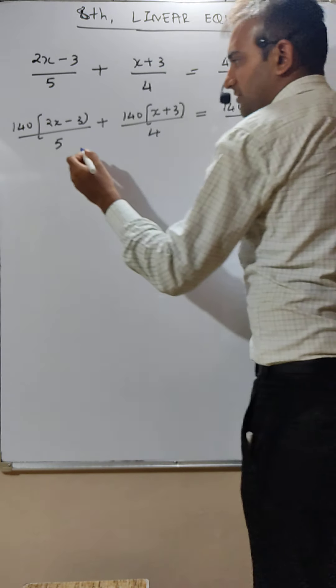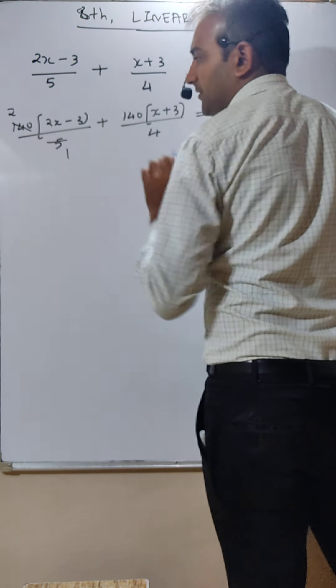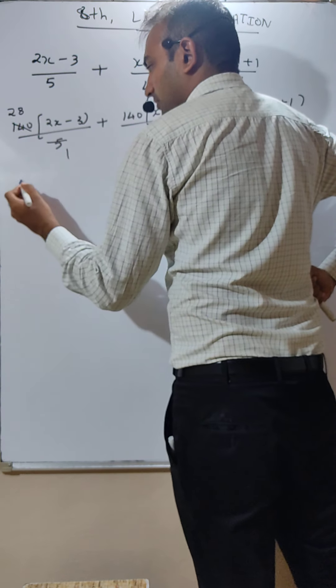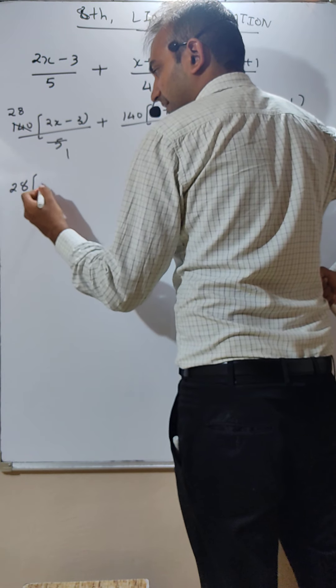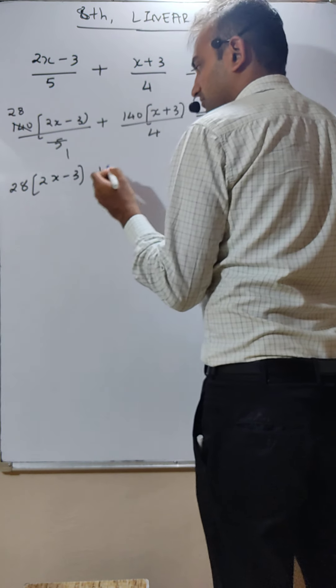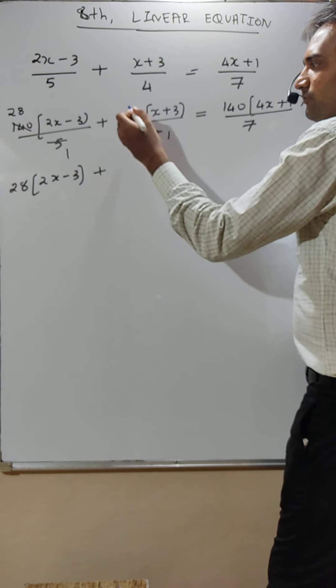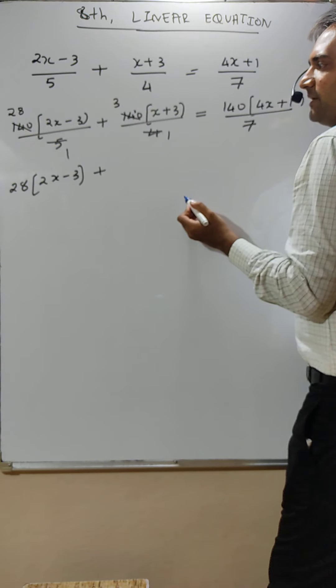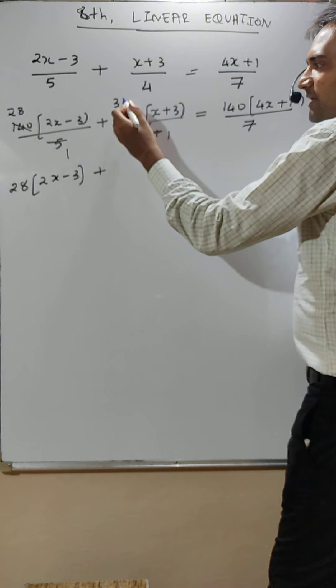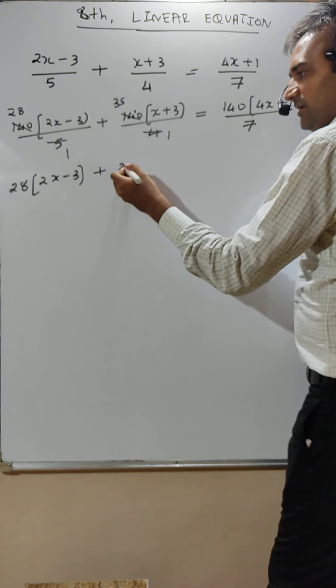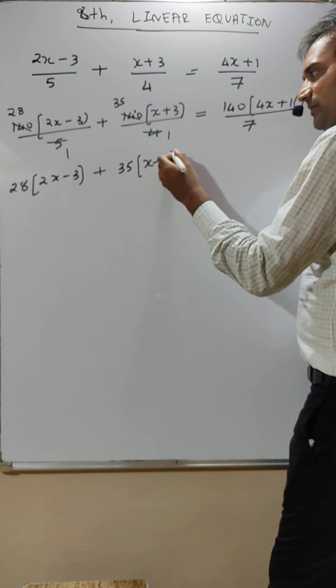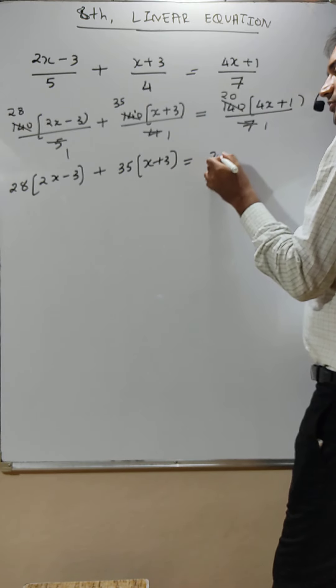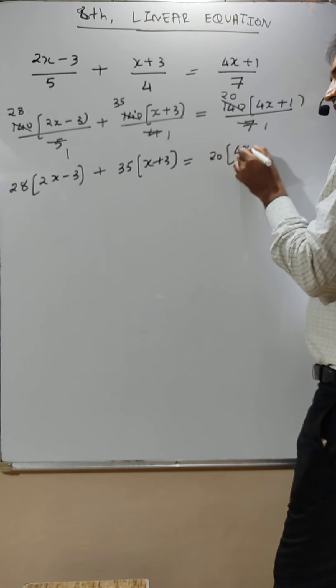Okay, so let us do first. 5 twos are 10, remainder is 4, 40 means 28. I will put here 28 bracket 2x minus 3 plus. 4 threes are 12, remainder is 2, 20, so it means 35 bracket x plus 3 is equal to. 7 ones are 7, so 20 bracket 4x plus 1.